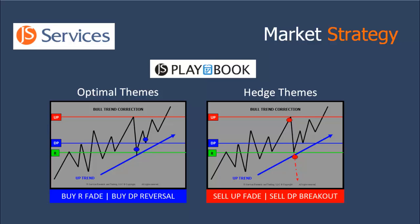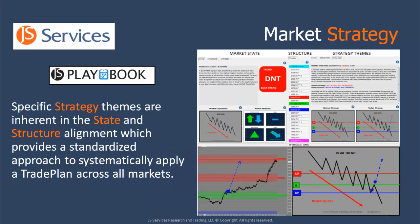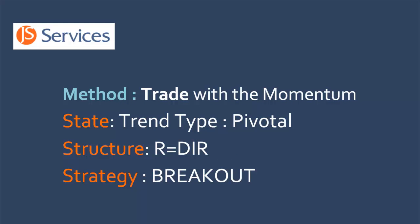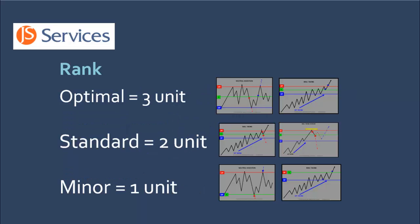The naming schema is as follows: an optimal strategy that is Buy R Fade means you want to buy the market using a fade entry technique at the R level. By aligning your fade tactics to the playbook strategies, you have a standardized approach to when to use tactics as well as a systematic way to define the proper size to allocate to the trade. Specific strategy themes are inherent in the state and structure alignment, which provide a standardized approach to systematically apply a trade plan across all markets. For example, if your method is to trade with momentum, and you like conditions that are pivotal, with pivotal structure that can produce big movement, with a strategy theme that signals a breakout — as you align your method with JS Analytics, you standardize your approach, which provides a systematic way to apply value to an opportunity and to optimize your tactics and the risk management that you want to apply.